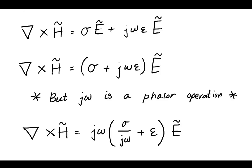Now, recall that j omega is a phasor operation. In the phasor domain, j omega is like taking a derivative,